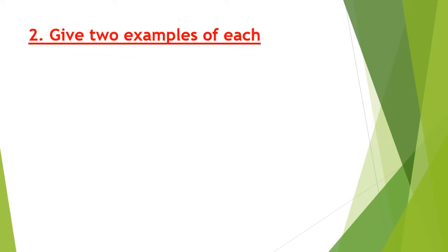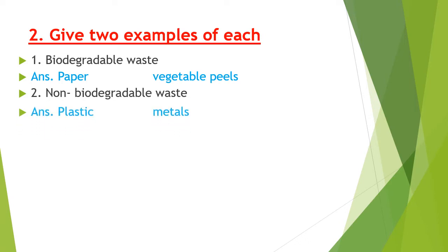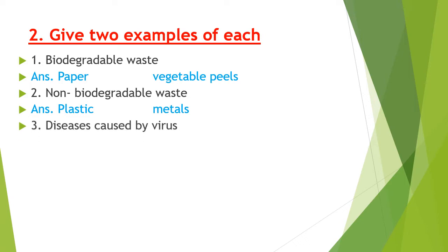Part 2: give two examples of each. In this question we have to give two examples of each of the following. First, biodegradable waste — the two examples are paper and vegetable peels, because they can be decomposed easily. Number 2, non-biodegradable waste — our options are plastic and metals. Number 3, diseases caused by virus — virus can cause chickenpox and measles.